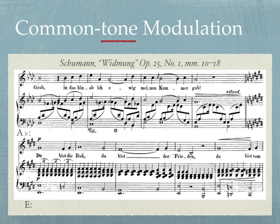Did you notice the A-flat in the voice and piano being retained over the key change and transforming harmonically to G-sharp? This is a tricky example of common tone modulation because the tone being held in common is spelled differently but still sounds the same. This is how Schumann could modulate from four flats to four sharps, practically across the circle of fifths, by using a single common tone.